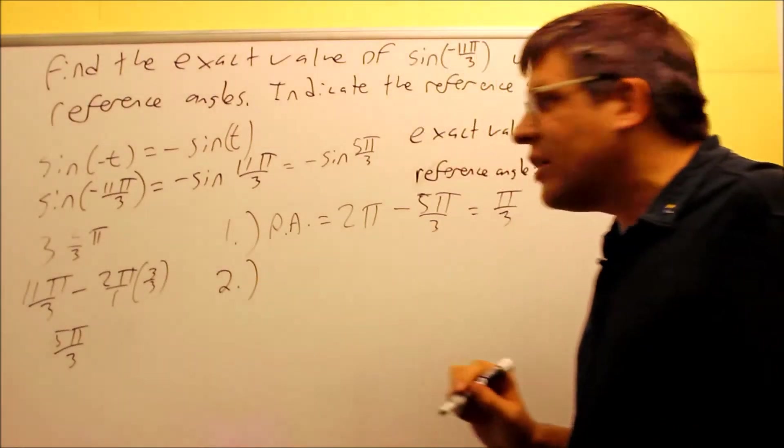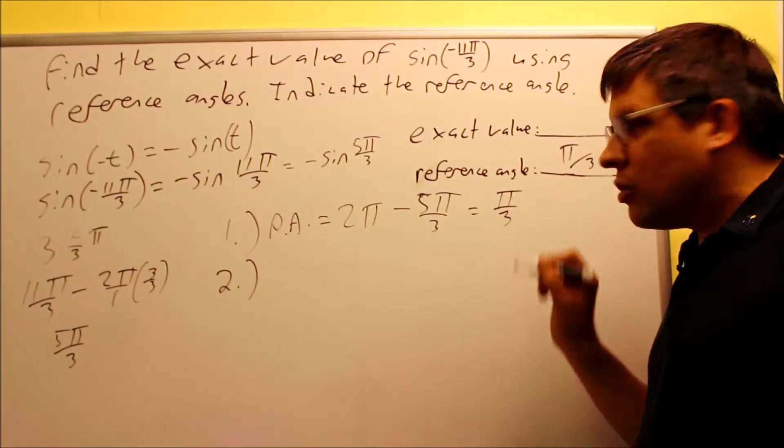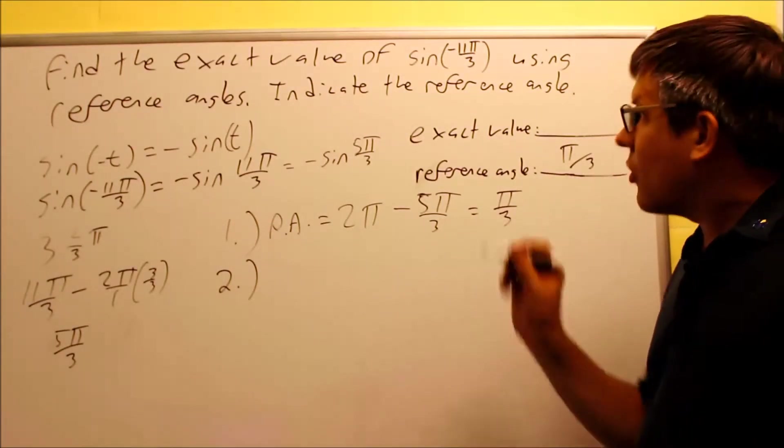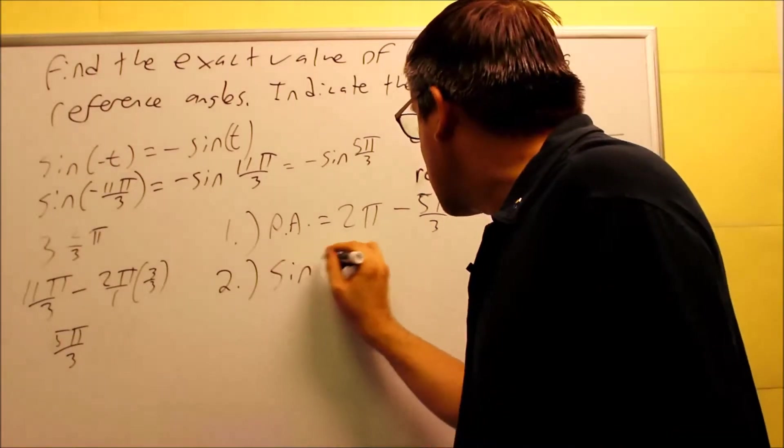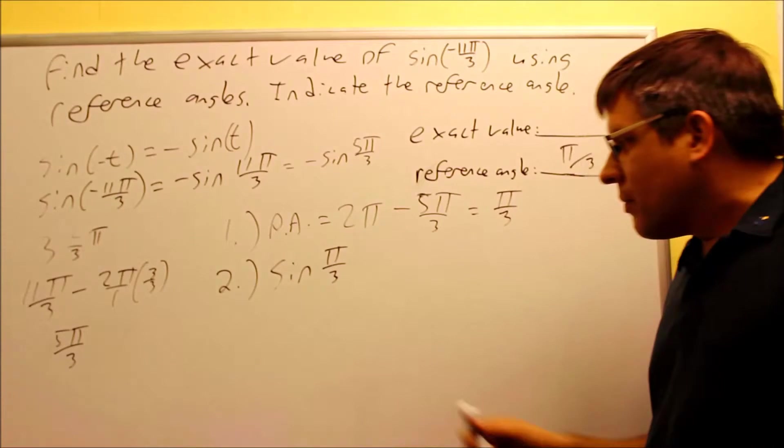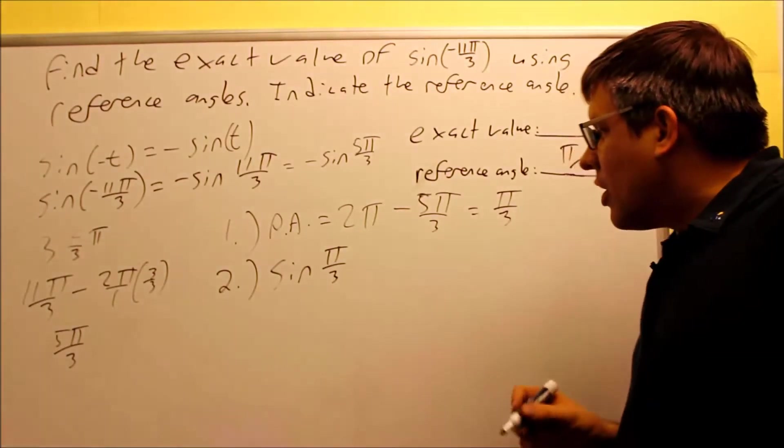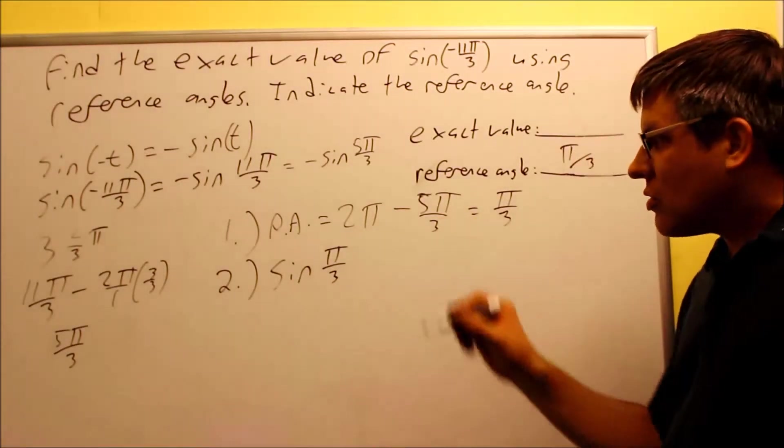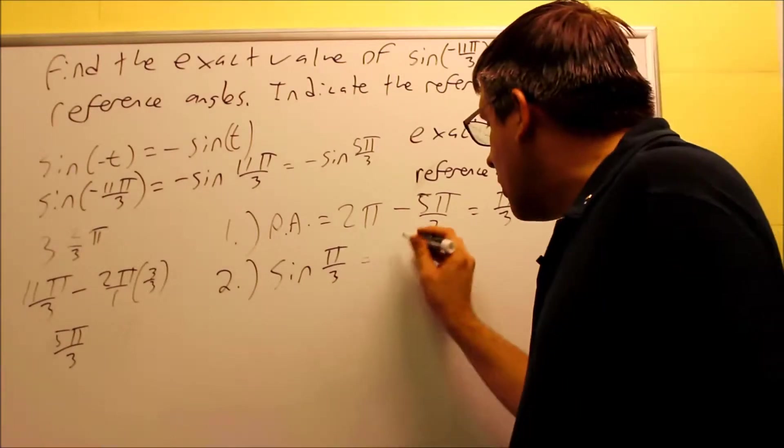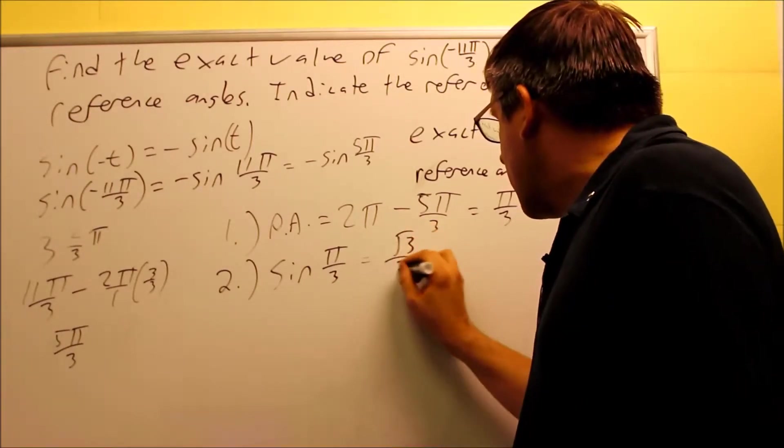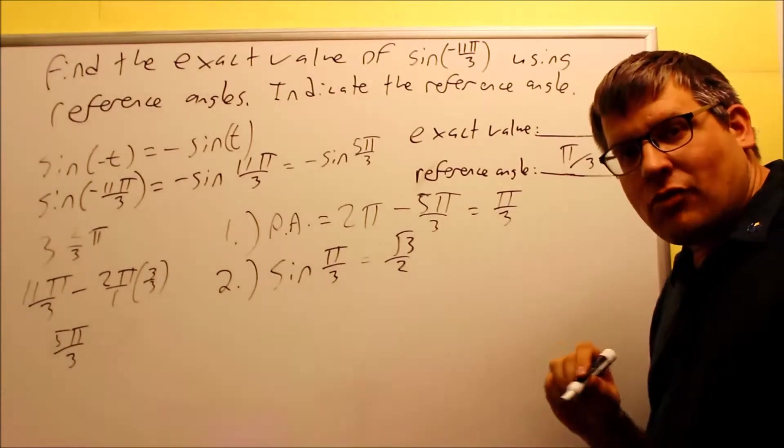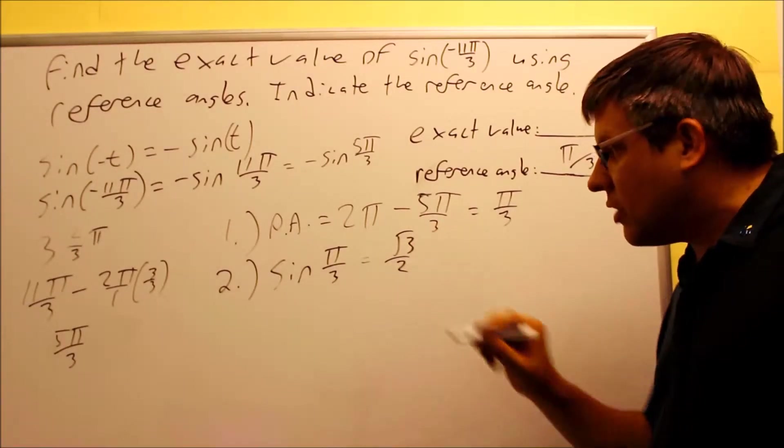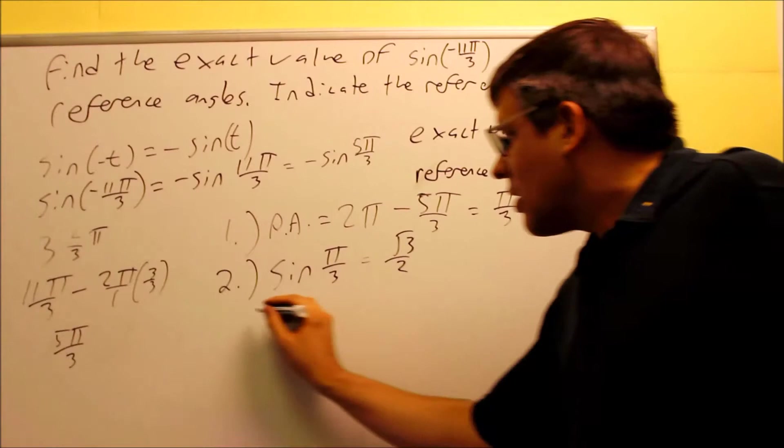Step number 2, I'm applying the trig function to the reference angle. The trig function I'm using is the original one in the problem, which was sine. So I want to do sine of π over 3. If I do that, that's going to be 60 degrees. So sine 60, the value is square root of 3 over 2. That's what I would get from the table, my table of trig values, or my unit circle. Square root of 3 over 2.